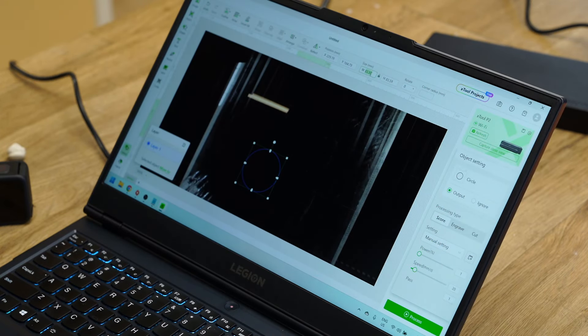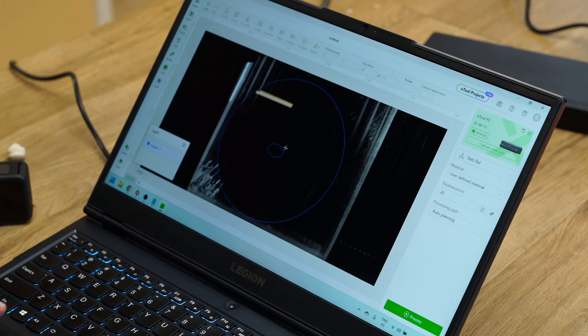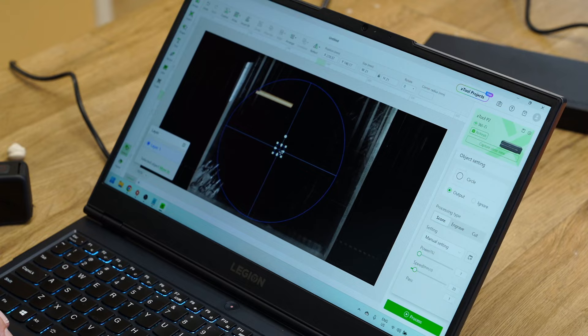The XTool software made it super simple to draw the tool path for the lid. For this job I required a 21 millimetre hole to mount the air fittings and an outside cut diameter of 280 millimetres. With the job sent to the P2 laser machine it's time to start cutting.